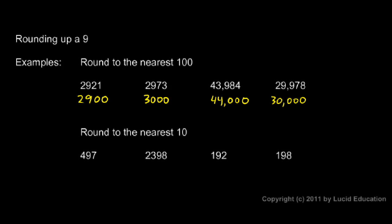30,000 is the nearest hundred. The nearest hundred, in this case, also happens to be an even thousand and an even 10,000. That's okay. Instead of rounding down to 29,900, we round up to the next hundred, which is 30,000.